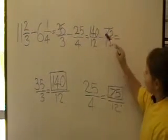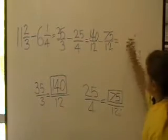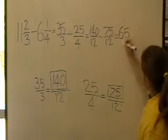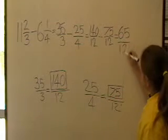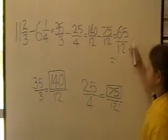Now we go 140 take away 75 which equals 65 on 12. But this is an improper fraction.